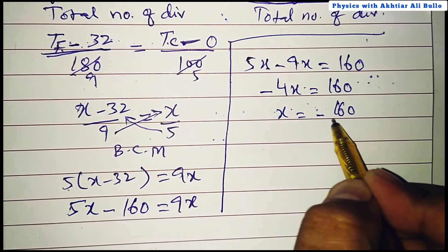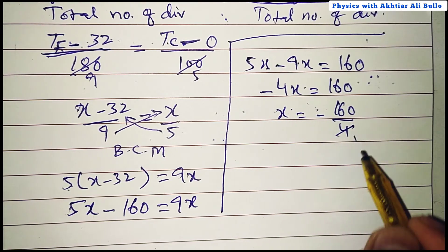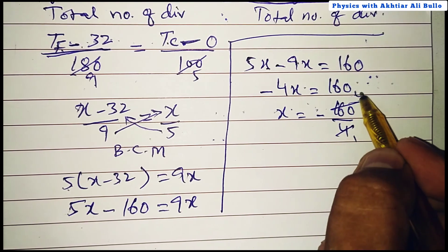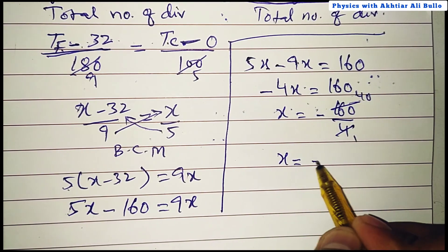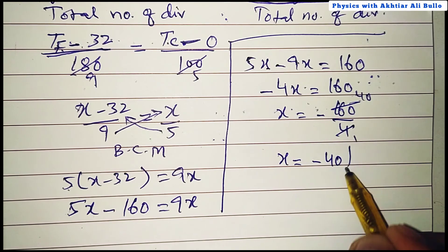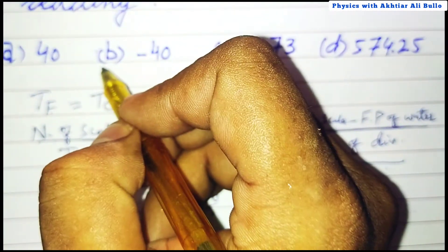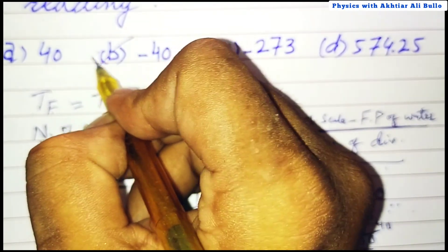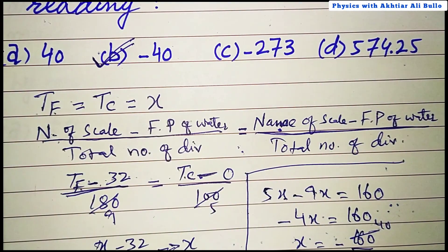So x = −160 / 4 = −40. We have obtained x = −40, so the correct option is B: minus 40.